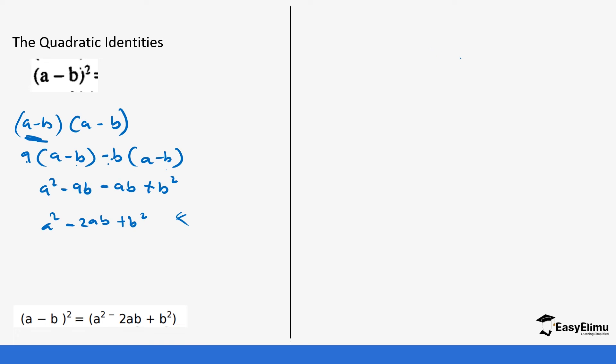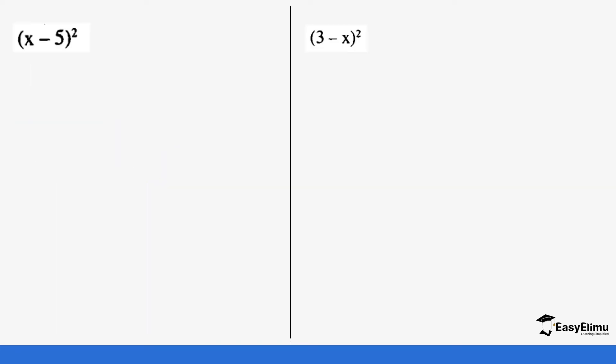This is slightly different from what we did in our previous video, because there we had a² + 2ab + b². Let's do some examples so that you can see what we mean.